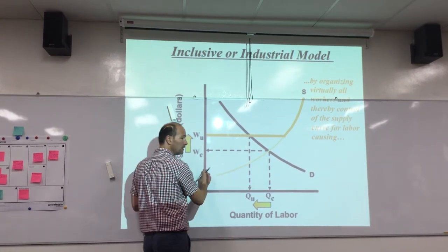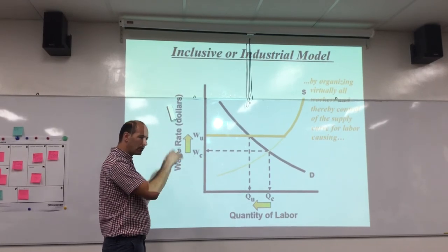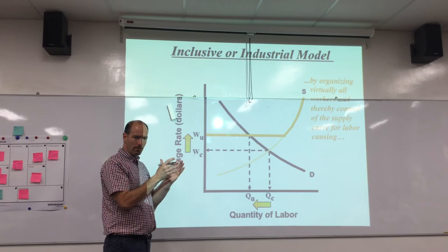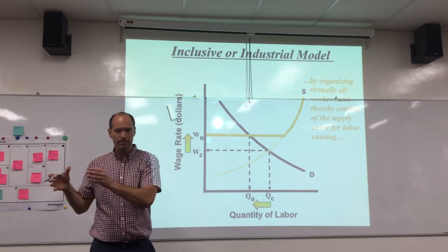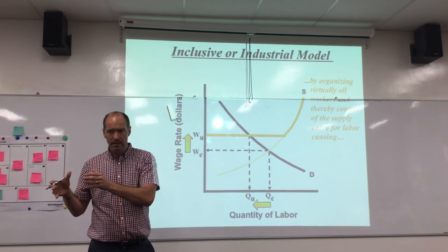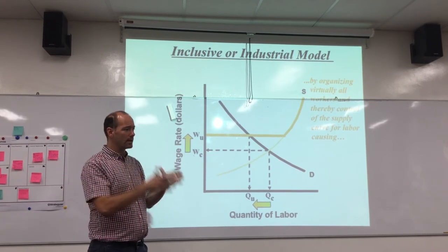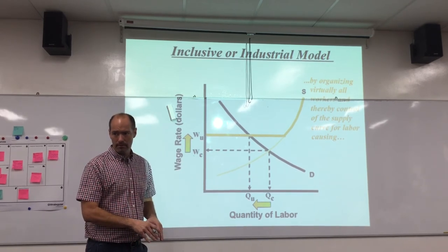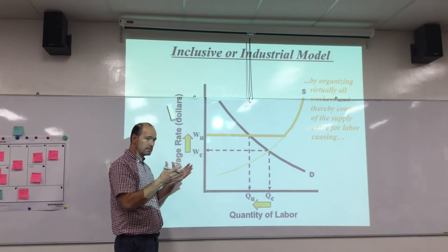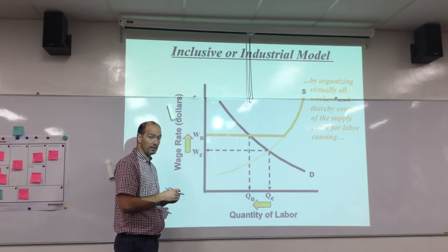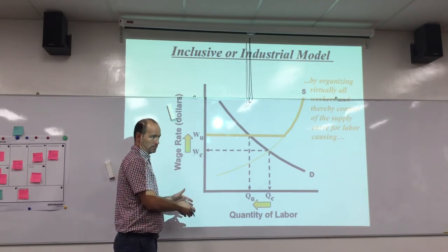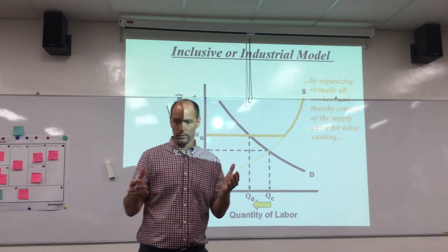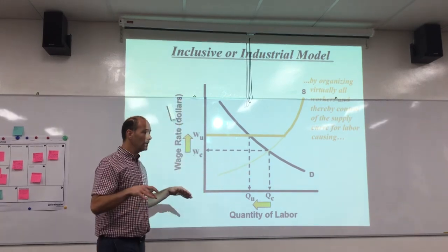Through collective bargaining, everybody bargains for one wage and a certain set of benefits, and if they don't get it, they all walk out and don't work — that shuts down production. The business is then faced with a situation where they either pay their workers or they don't produce. It's basically a cost-benefit situation for them.